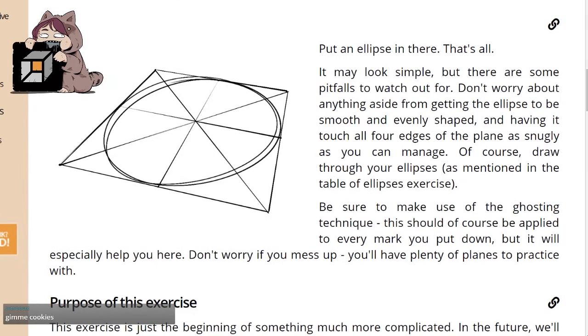Put an ellipse in there. That's all. It may look simple but there are some pitfalls to watch out for. Don't worry about anything aside from getting the ellipse to be smooth and evenly shaped, and having it touch all four edges of the plane as snugly as you can manage. Of course, draw through your ellipses as mentioned in the table of ellipses exercise. Be sure to make use of the ghosting technique. Don't worry if you mess up, you'll have plenty of planes to practice with.